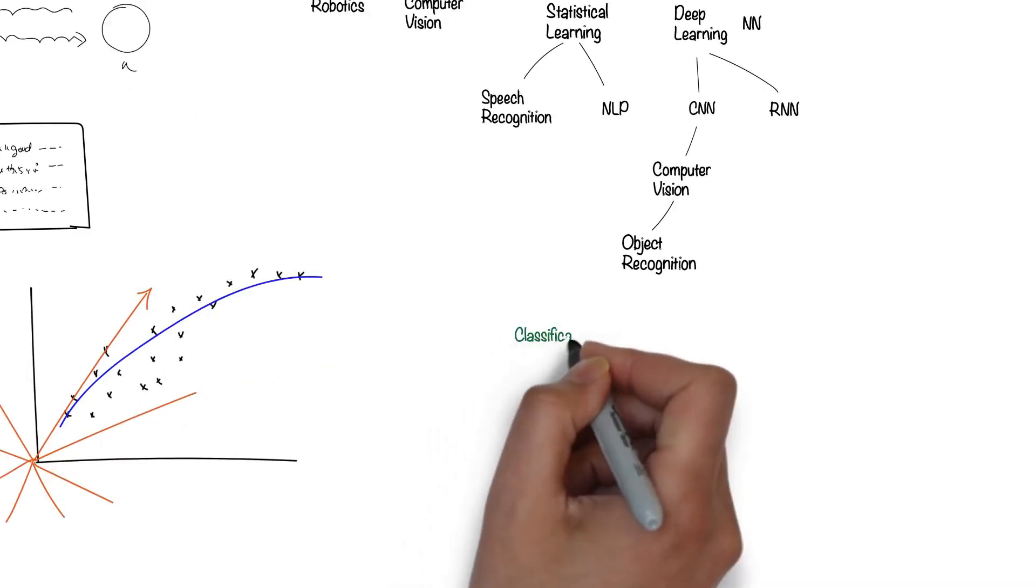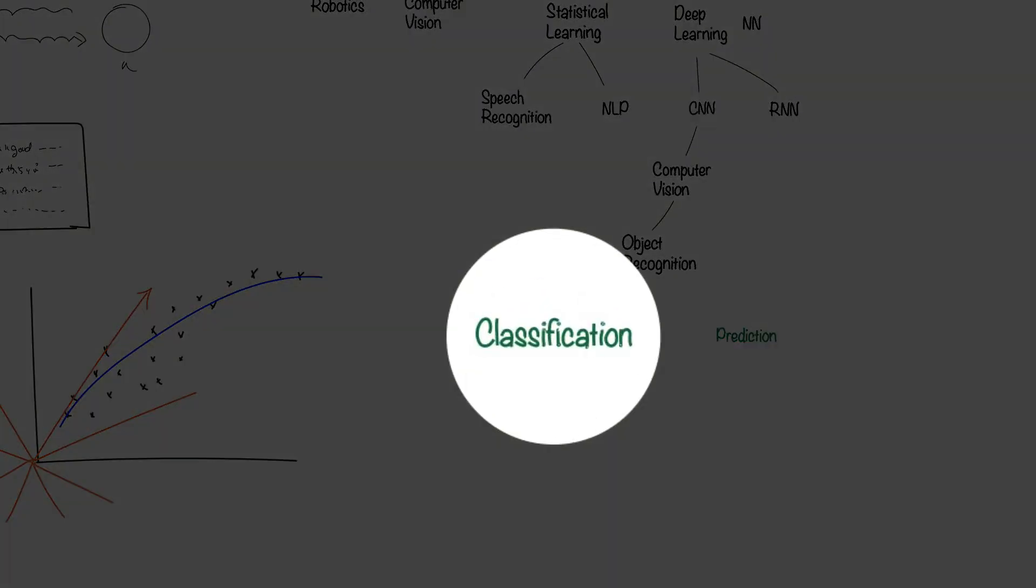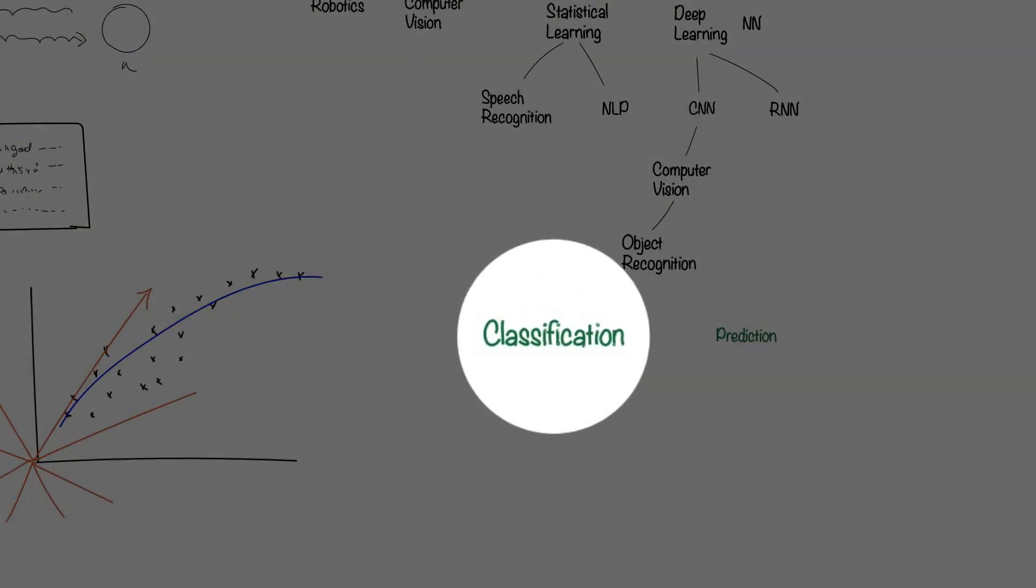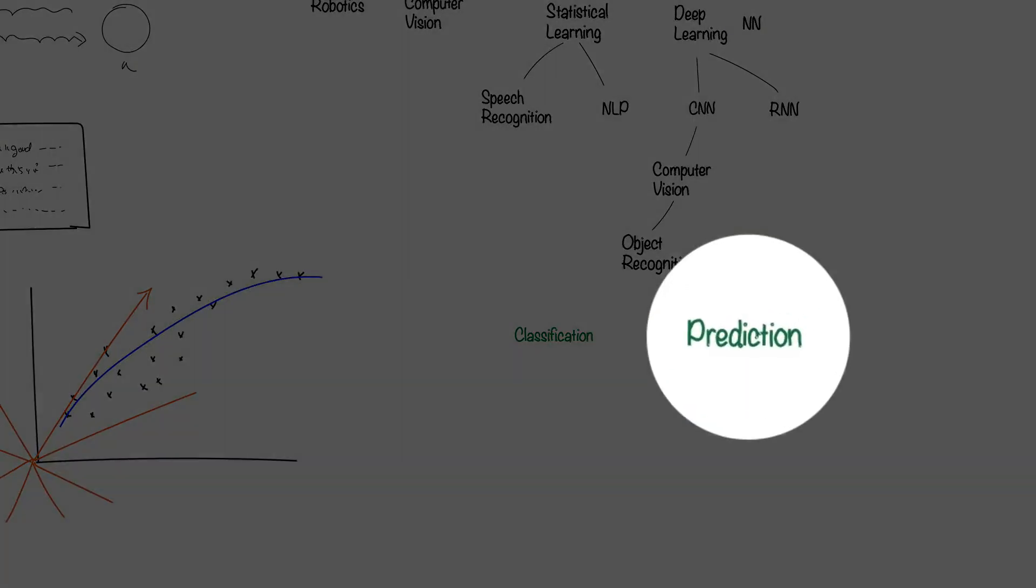We can use all these machine learning techniques to do one of two things: classification or prediction. As an example, when you use some information about customers to assign new customers to a group, like young adults, then you are classifying that customer. If you use data to predict if they're likely to defect to a competitor, then you're making a prediction.